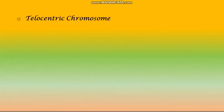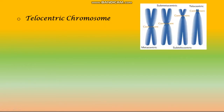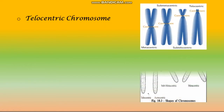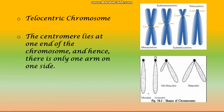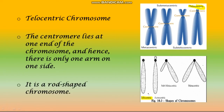Telocentric chromosome: the centromere lies at one end of the chromosome and hence there is only one arm on one side. It is a rod-shaped chromosome.